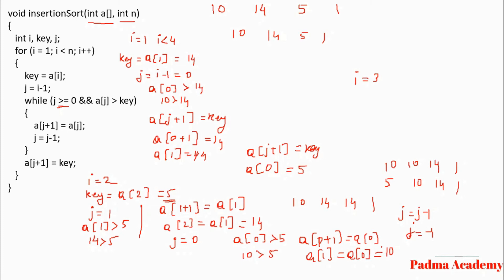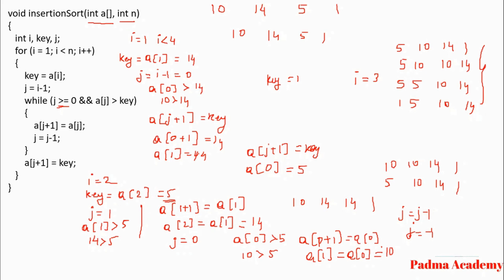When i equals 3 the key value becomes 1. The array shifts step by step: first to 5, 10, 10, 14; then to 5, 5, 10, 14; and finally to 1, 5, 10, 14. So please try it yourself. Our final sorted array in ascending order is 1, 5, 10, and 14 — achieved through insertion sort.